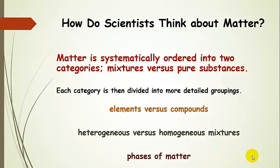So how do scientists think about matter? Matter is systematically ordered into two categories: mixtures versus pure substances. We can take each one of those categories and break them down even further. We can take pure substances and break them down into elements versus compounds. We can take mixtures and break them down into heterogeneous mixtures versus homogeneous mixtures. We can also take pure substances and break them down into the phases of matter.